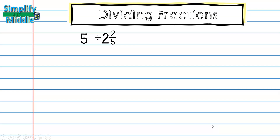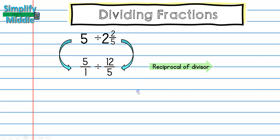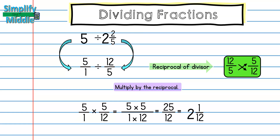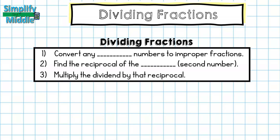For our last example we have 5 divided by 2 and 2/5. I'll rewrite 5 as 5/1, and convert 2 and 2/5: 5 times 2 is 10, plus 2 is 12, so that's 12/5. I find the reciprocal of my divisor 12/5, which gives me 5/12. Now I multiply: 5/1 times 5/12 gives me 25 over 12. Written as a mixed number, that's 2 and 1/12.